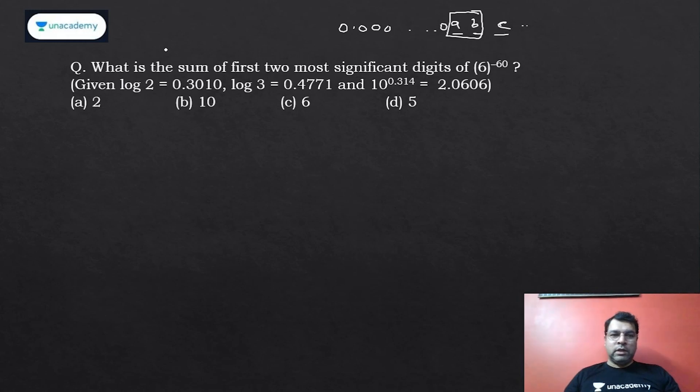Just try this out. You're given some values of logs, so let's see what is the answer. We need to find 6^(-60). The logic will be conceptual. Let's say A = 6^(-60). When you take log, log A = -60 × log 6.